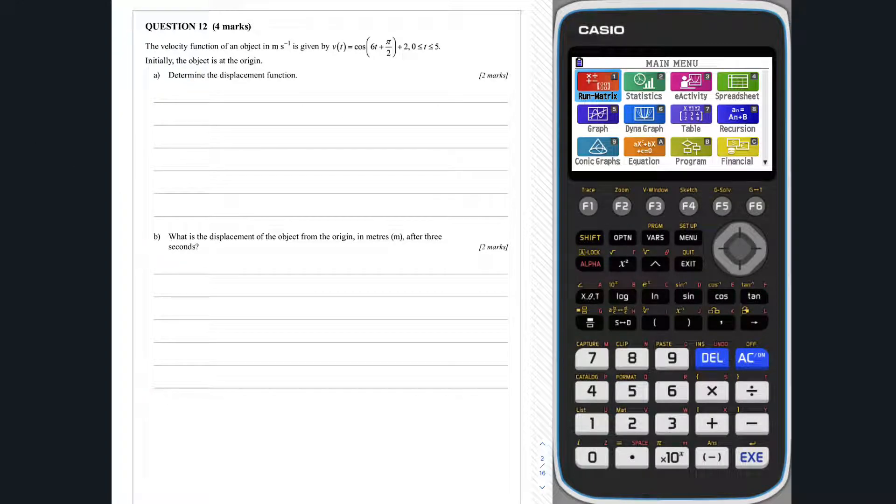Question 12, part a. The displacement function can be found by calculating the integral of the velocity function as follows.